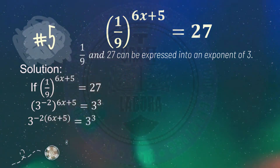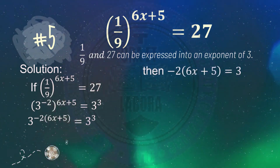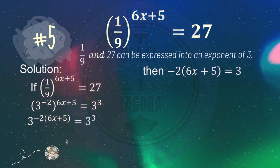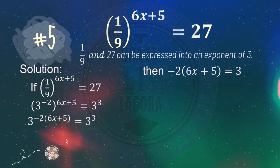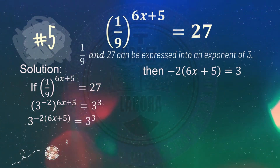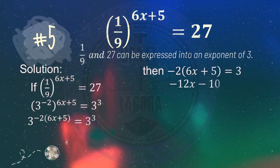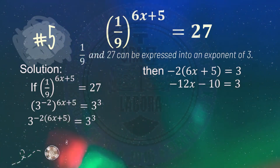Simplifying, we get 3 raised to negative 2 times quantity 6x plus 5 equals 3 cubed. Since both sides now share the same base, we can solve for x: negative 2 times quantity 6x plus 5 equals 3. Distributing negative 2 to 6x plus 5 gives negative 12x minus 10 equals 3.